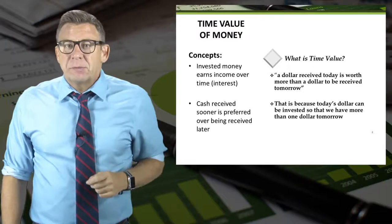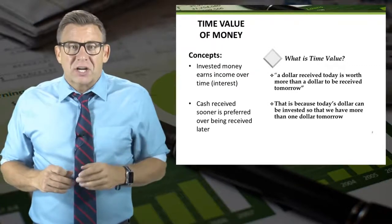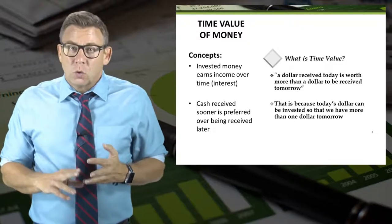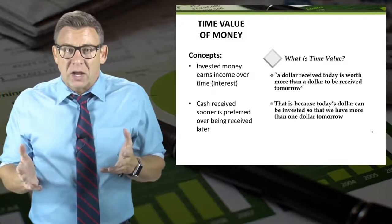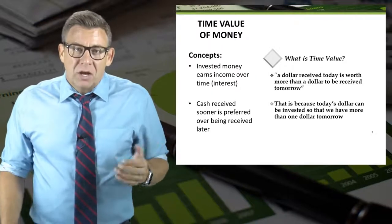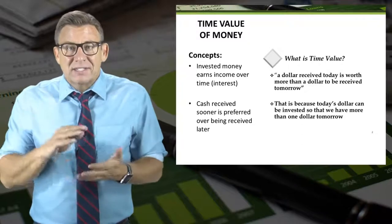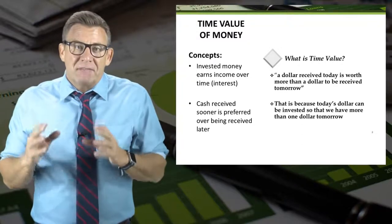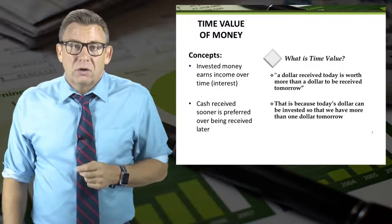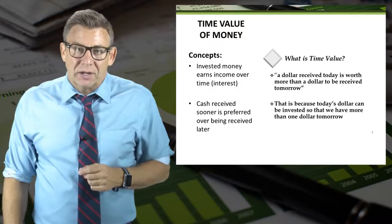You all know this to be inherently true, even if you don't know why. Ask yourself: if your grandpa offered you $1,000 today or $1,000 when you graduate college, which would you choose? Of course, you would choose today. The reason is because today's dollar can be invested so that you would have more than $1,000 when you graduate college.